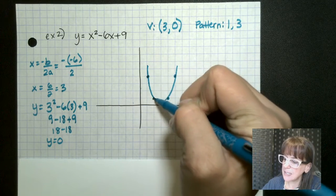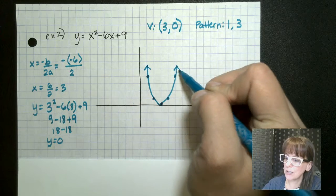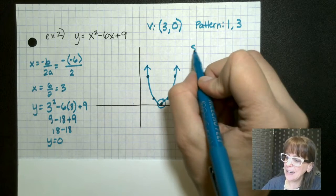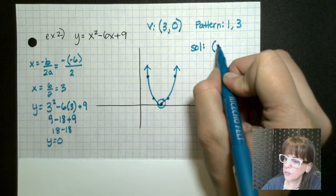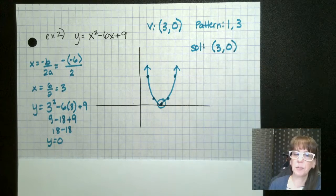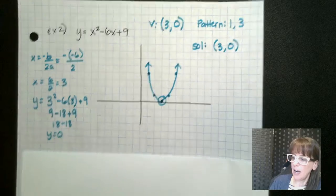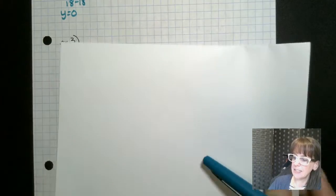Now, this is a case of one solution. So we only have one solution here and it occurs at three comma zero.